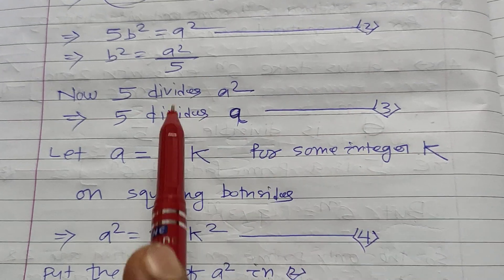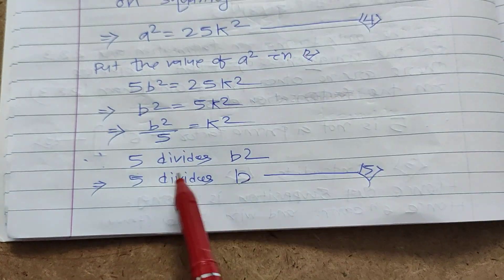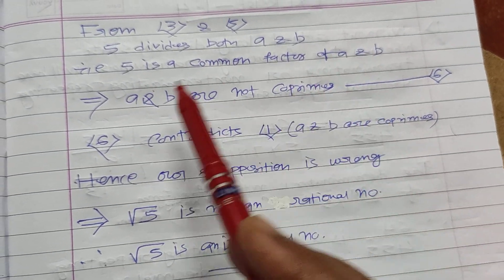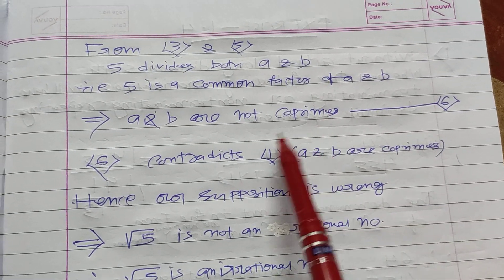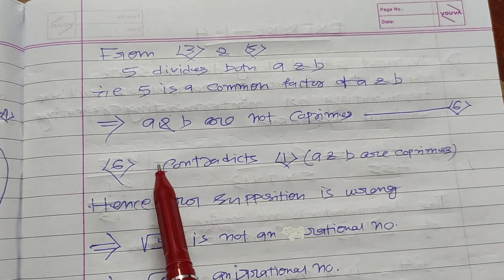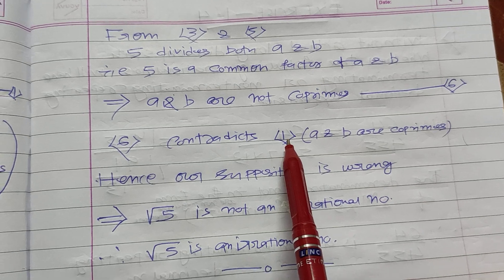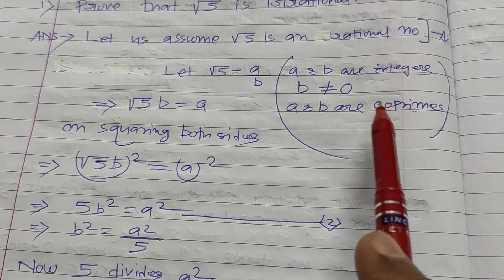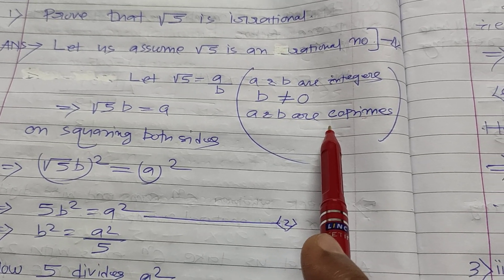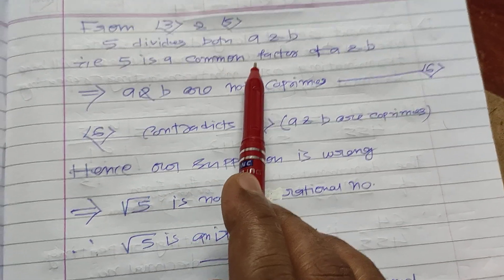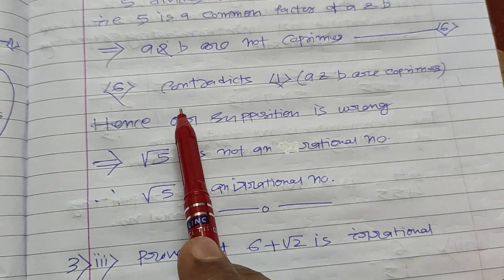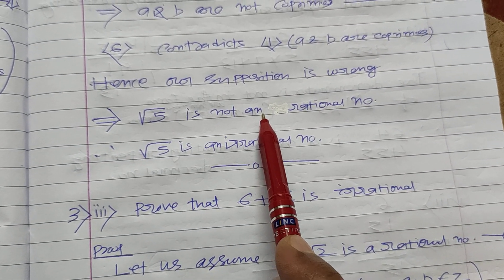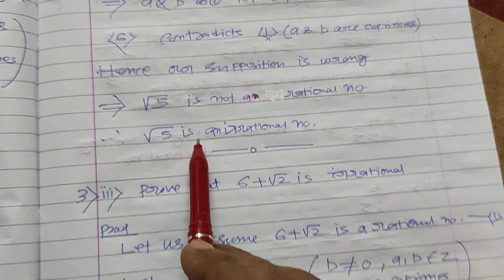From these two results — 5 divides a and 5 divides b — we get that 5 divides both a and b. That is, 5 is a common factor of a and b, which implies a and b are not co-primes. This contradicts our assumption that a and b are co-primes, meaning they do not have any factor in common other than 1. Hence our supposition is wrong, and root 5 is an irrational number.